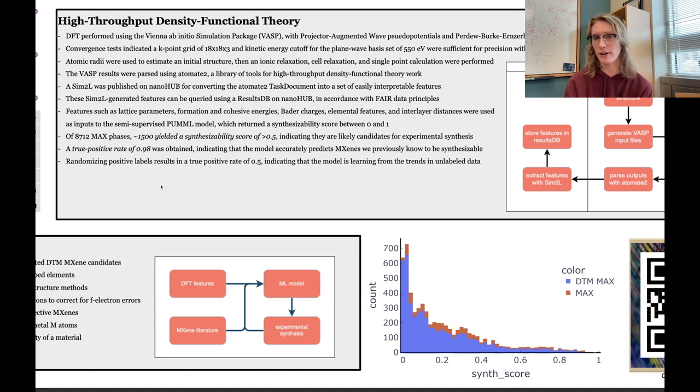We feed these to our semi-supervised model to predict a score of how likely something is to be synthesized. That's this plot I'm showing here. Zero is unlikely to be synthesized, one is most likely. We've generated about 600 MXenes which we expect to be likely candidates for synthesis.